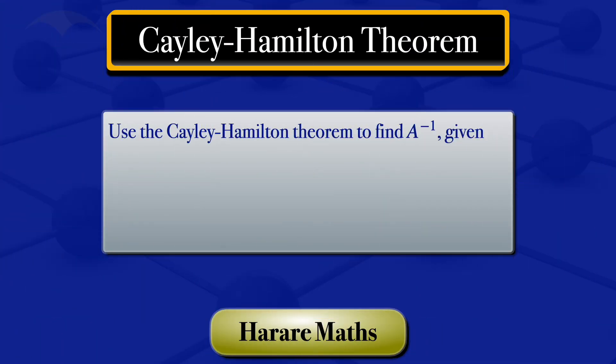In this tutorial, I am going to use the Cayley-Hamilton theorem to find the inverse of matrix A, which has elements 5, minus 1, 5, 0, 2, 0, minus 5, 3, minus 15.